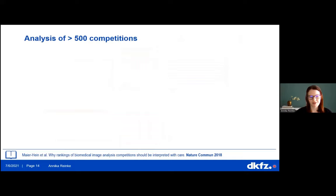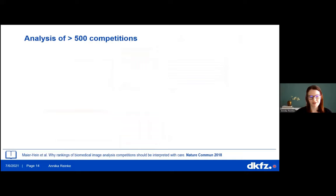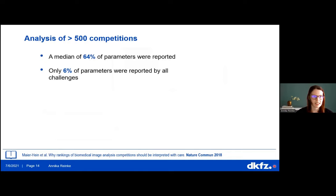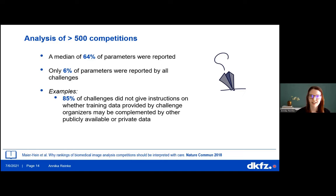We looked at more than 500 different competitions and checked how many parameters were reported. Unfortunately, only two-thirds of those parameters were reported across challenges, and only six percent were reported by all challenges — and those were things like the challenge name or website. For example, 85 percent of challenges gave no instructions on whether participants could supplement training data with their own or publicly available data.